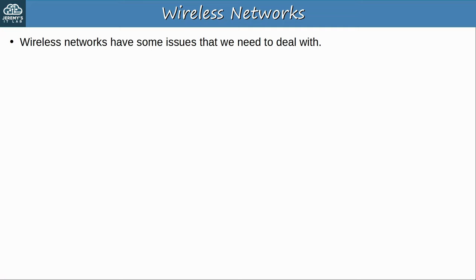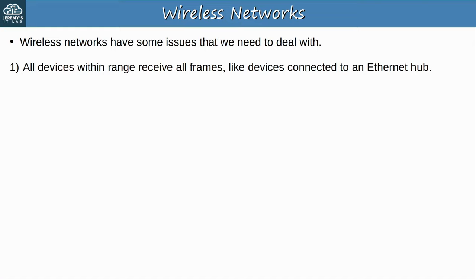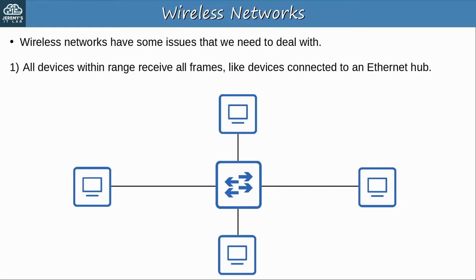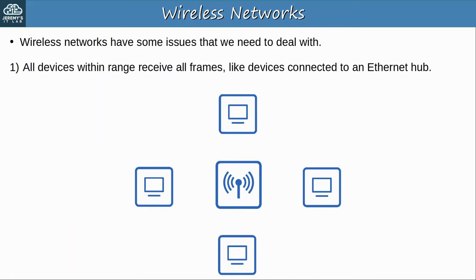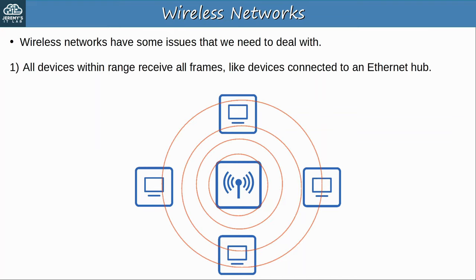Wireless networks have some issues that we need to deal with. First of all, all devices within range receive all frames, like devices connected to an Ethernet hub. When using an Ethernet switch, the switch is able to forward frames only to the intended recipient, and switches allow devices to function using full duplex, so devices can both send and receive frames at the same time, and collisions shouldn't occur. However, when using an Ethernet hub, the hub will always flood all frames it receives, and collisions can occur when multiple devices try to send and receive traffic at the same time. Like devices connected to an Ethernet hub, when a wireless device transmits a frame, all wireless-enabled devices within range will be able to pick up that frame, since the signal consists of electromagnetic waves radiating out from the transmitting device. This can lead to data privacy concerns, as well as collisions when devices communicate on the same channel at the same time.